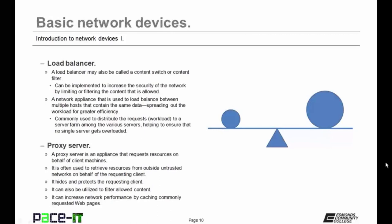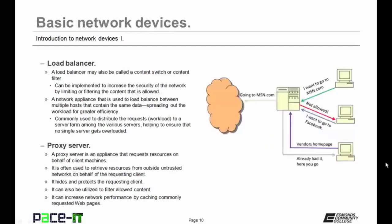A load balancer may also be called a content switch or content filter. Load balancers can be implemented to increase the security of a network by limiting or filtering the content that is allowed to be on the network. A load balancer can be a network appliance that is used to load balance between multiple hosts that contain the same data, spreading out the workload for greater efficiency. Load balancers are commonly used to distribute requests to a server farm among the various servers, helping to ensure that no single server gets overloaded.